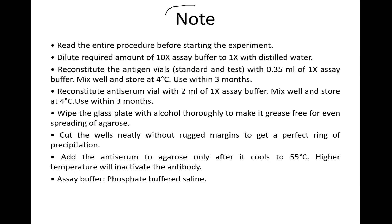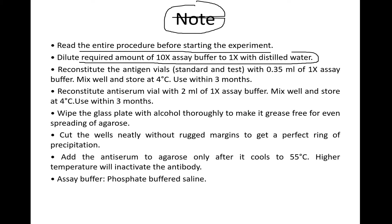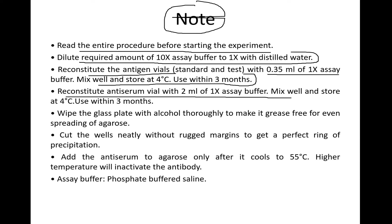Some important notes before starting: dilute the 10x assay buffer to 1x with distilled water. Reconstitute the antigen vials with 0.35 mL of 1x assay buffer, mix well, and store at 4°C — use within three months. Reconstitute the antiserum vials with 2 mL of 1x buffer, mix well, and store at 4°C.